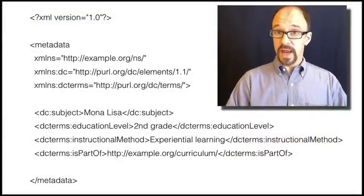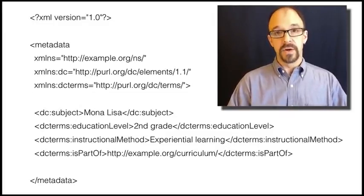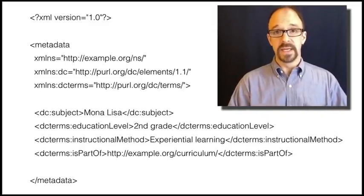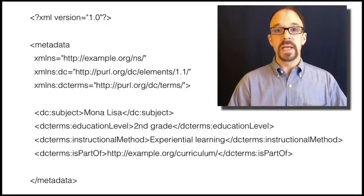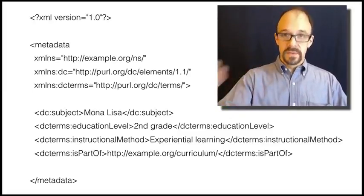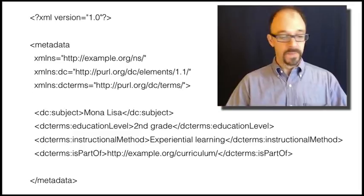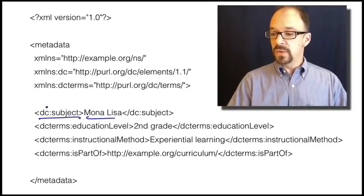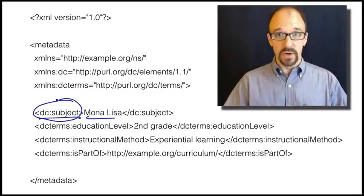But what if you want to use qualified Dublin Core, what if you want to use these terms? Let me show you what that would look like. Let's say that instead of creating a metadata record for the Mona Lisa, you wanted to create a lesson plan about the Mona Lisa. The subject of our lesson plan is Mona Lisa, and we can use DC colon subject because the subject element out of the main 15 elements works perfectly well here.